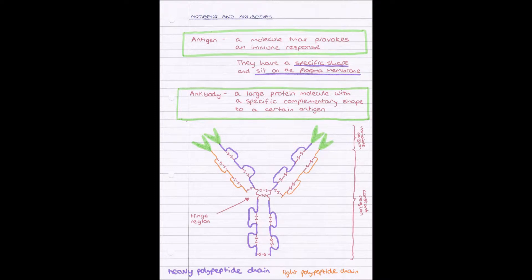I have a picture of an antibody here, and you don't need to know this exact detail I don't believe, but it's good to have a look at it anyway. So our antibody is made of four heavy polypeptide chains.